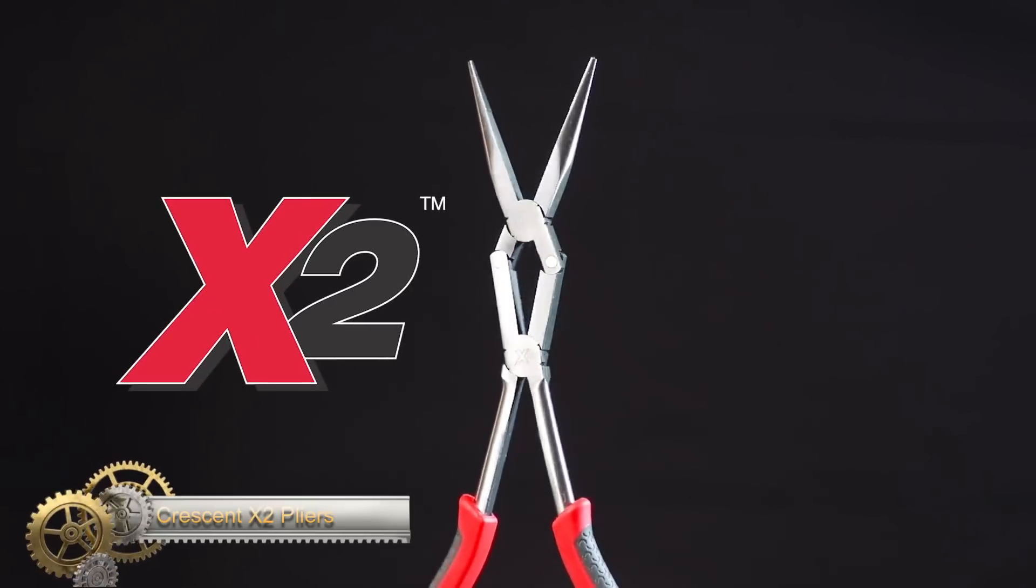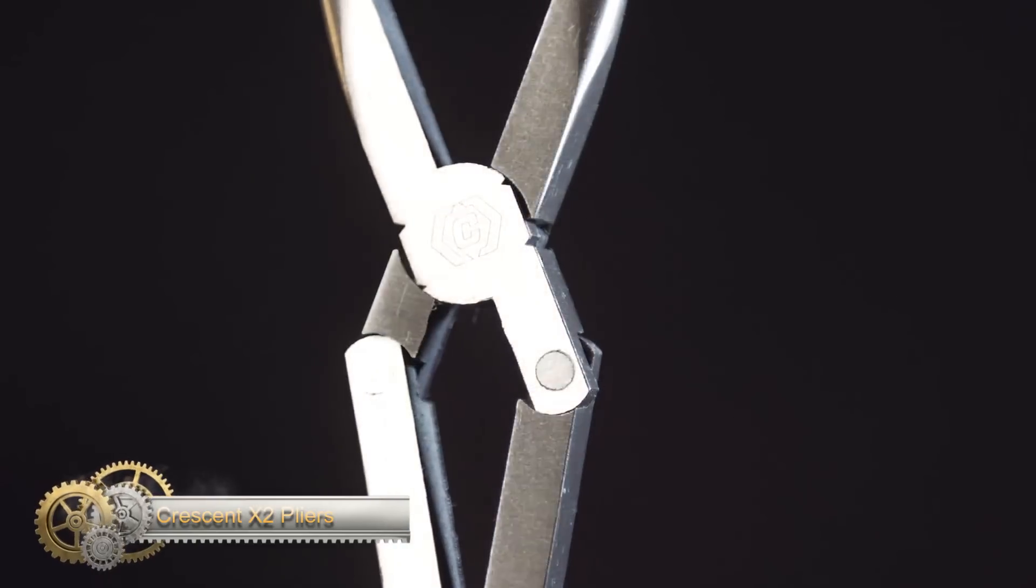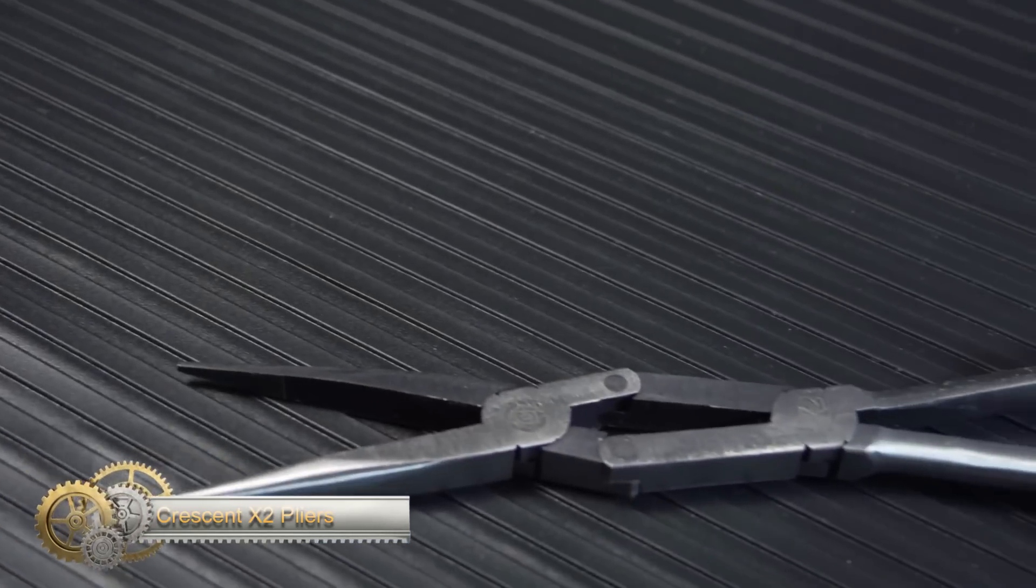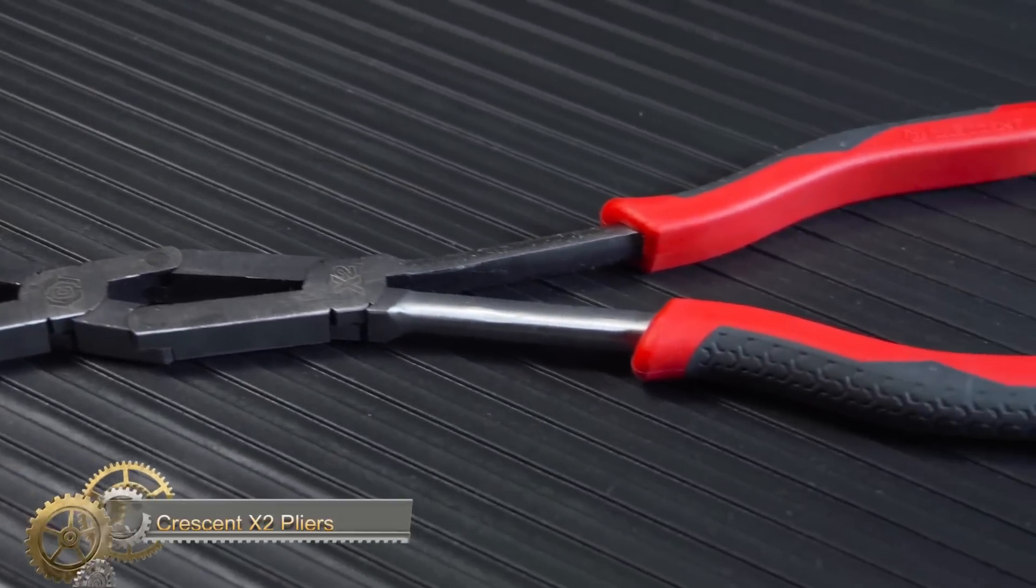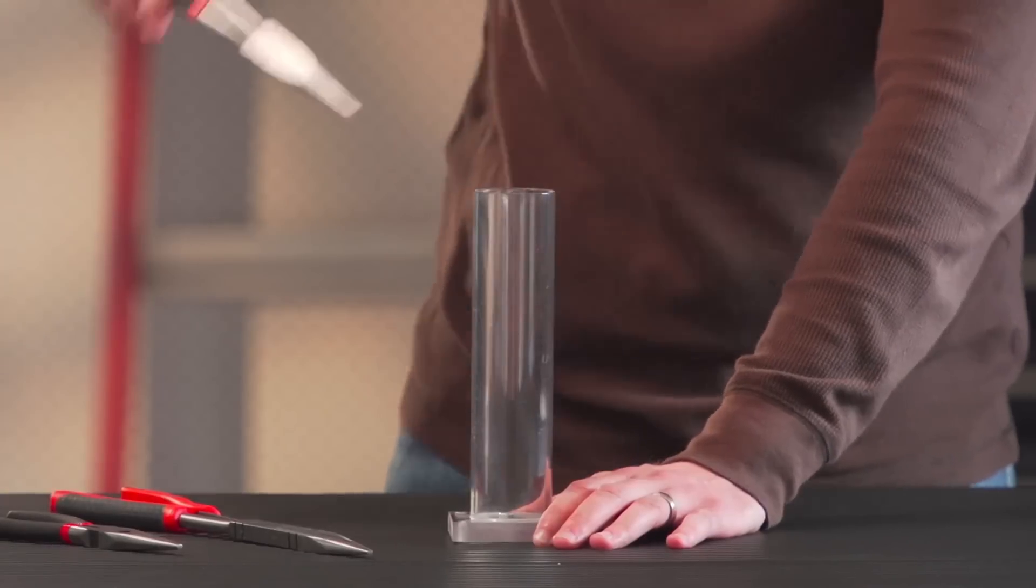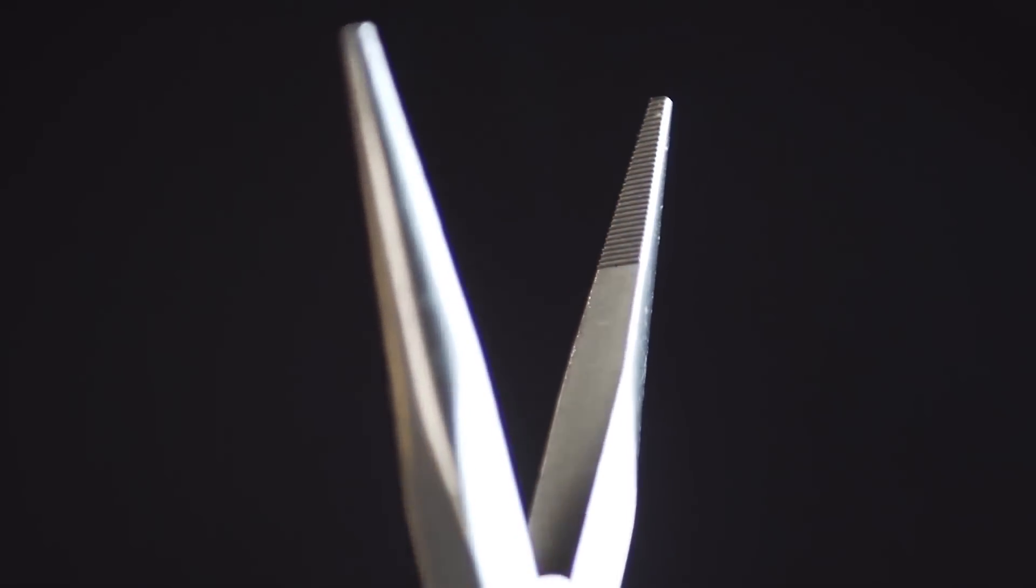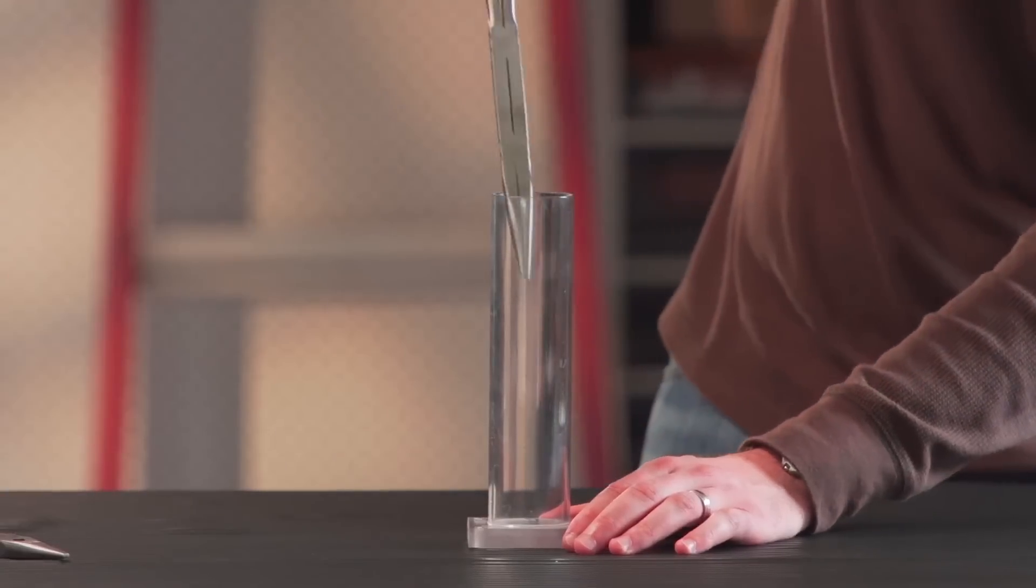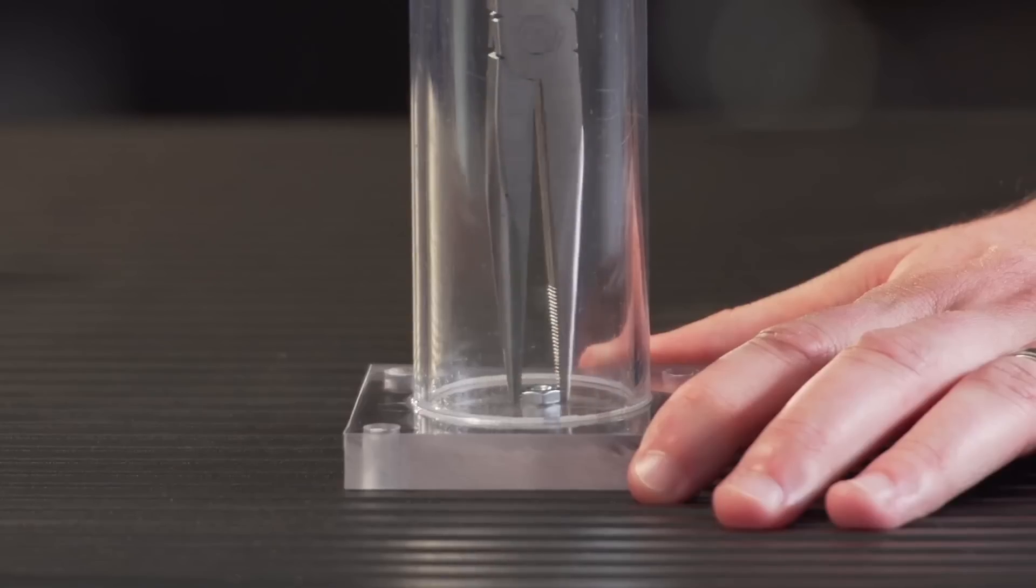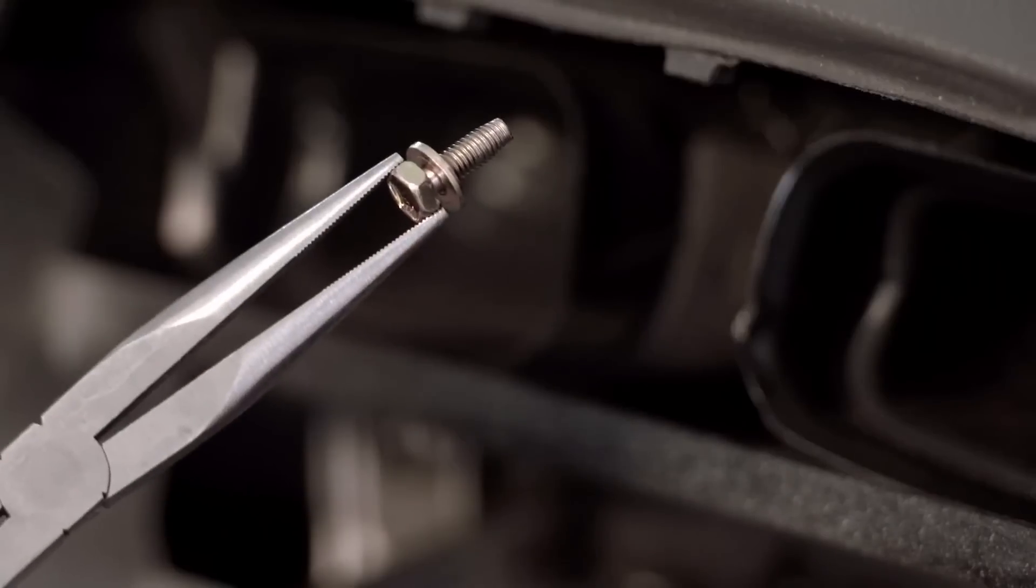The crescent two pliers are the ultimate tool for accessing tight spaces with ease. With their long reach and double joints, these pliers open wider with less effort, allowing you to reach into difficult areas that other pliers cannot. The flush rivets provide optimal strength and durability, while the dual-material grips improve ergonomics and comfort for extended use.